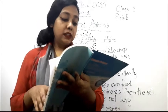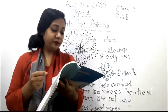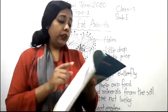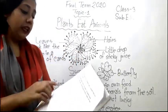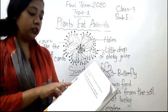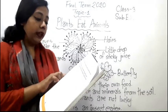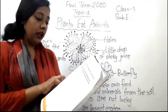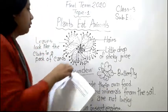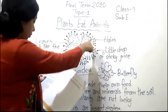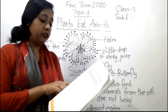Instead, some of these plants catch insects and eat them. The sundew is one such plant. It has leaves which look like the clubs in a pack of cards. There are many hairs on the leaves, and at the end of each hair is a little drop of sticky juice. It shines in the sunshine and the plant looks very beautiful.